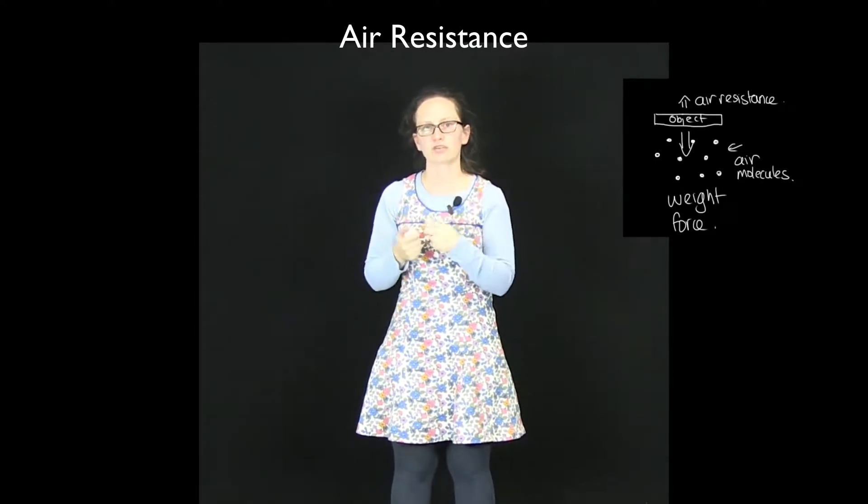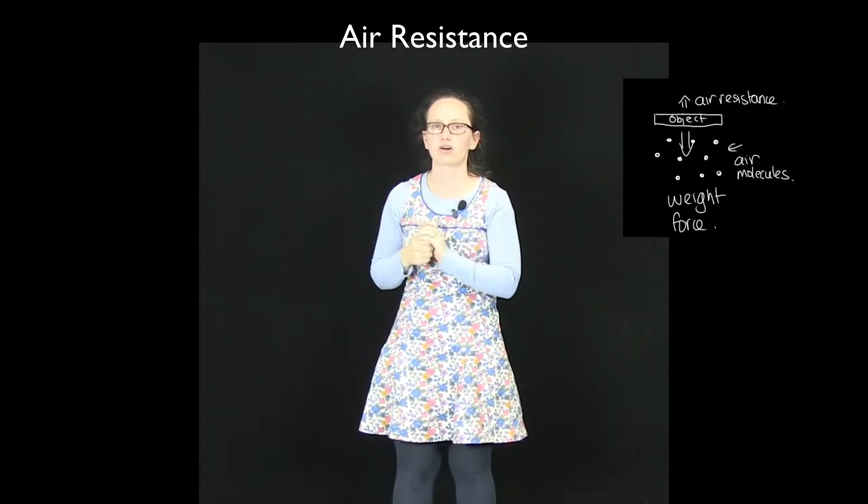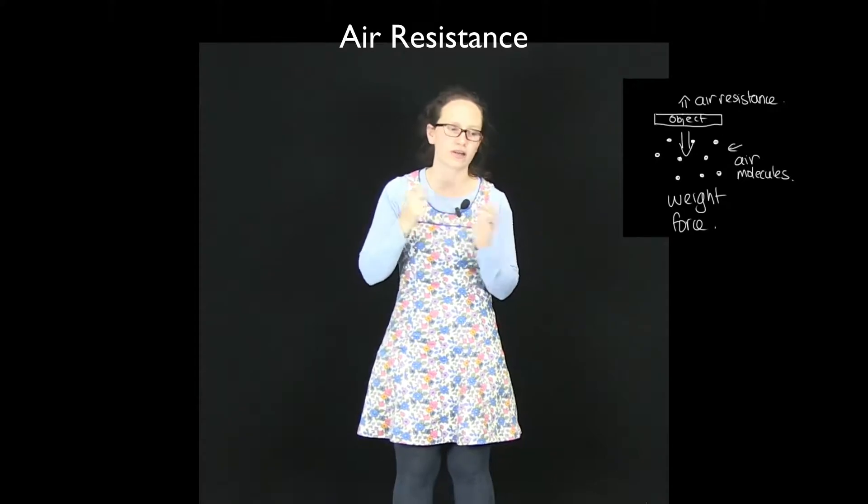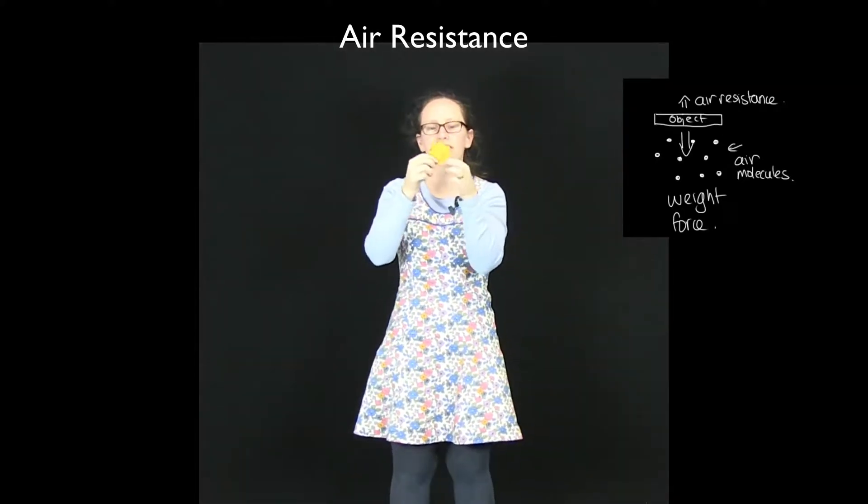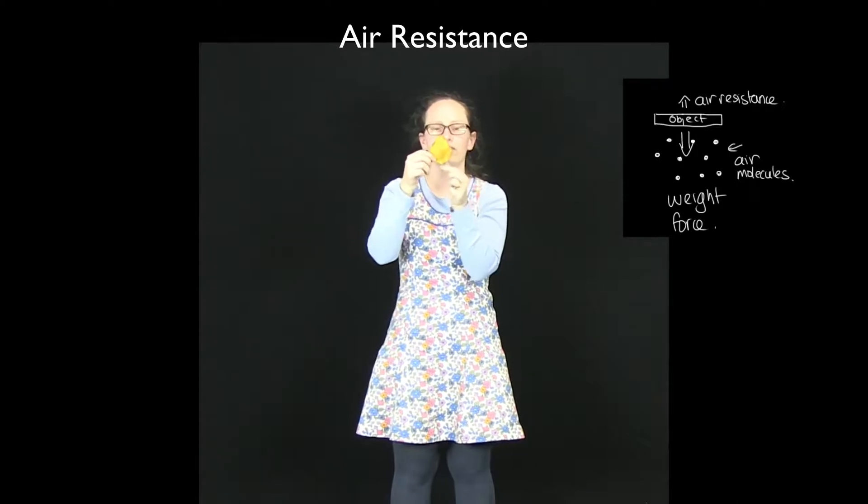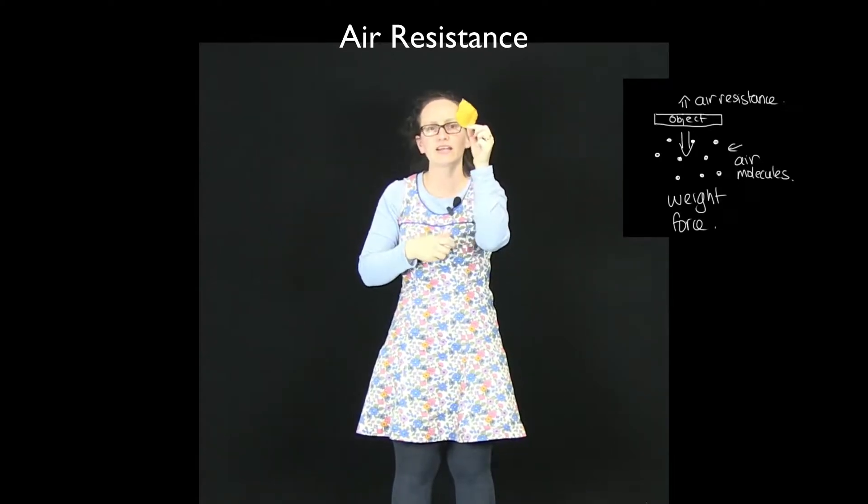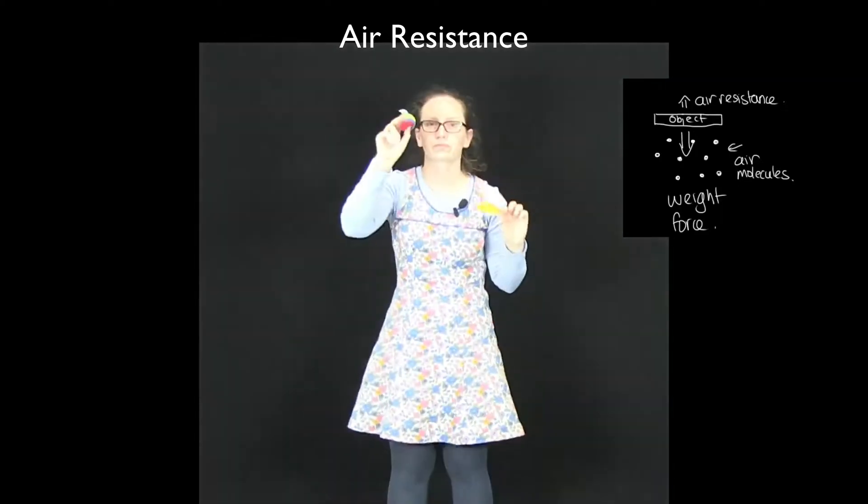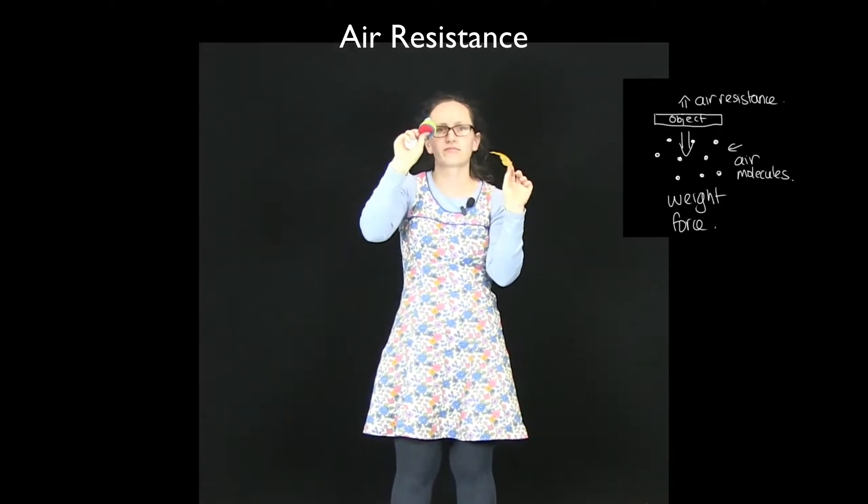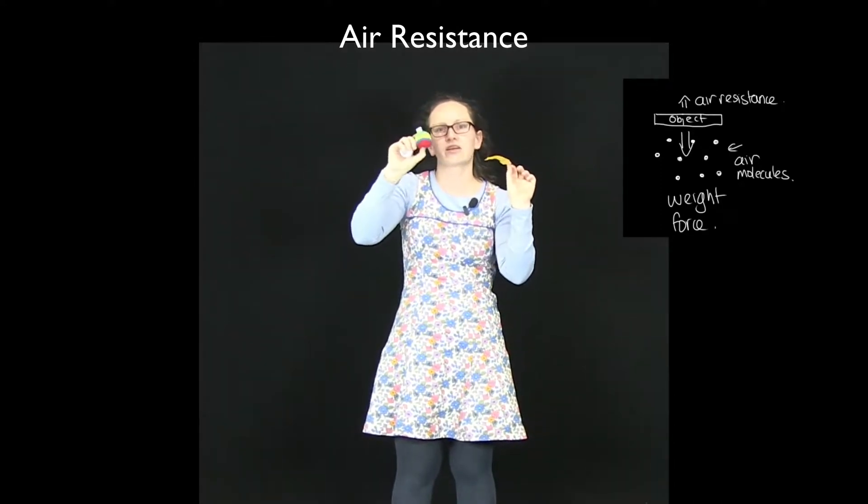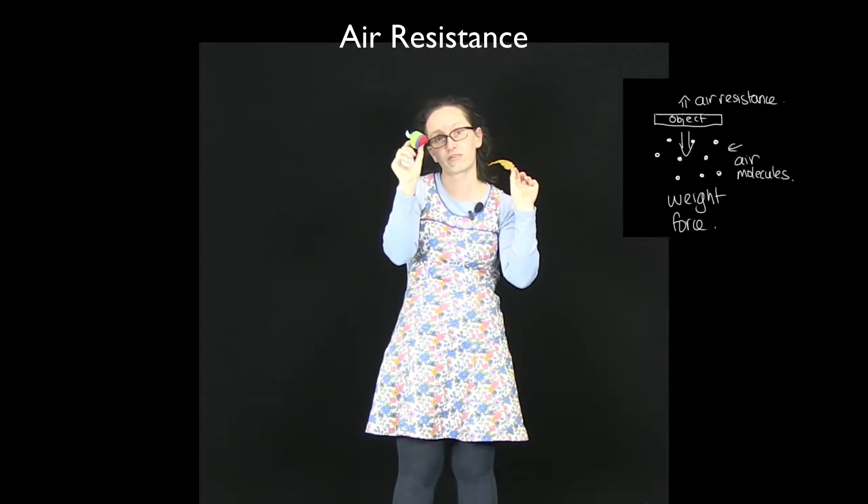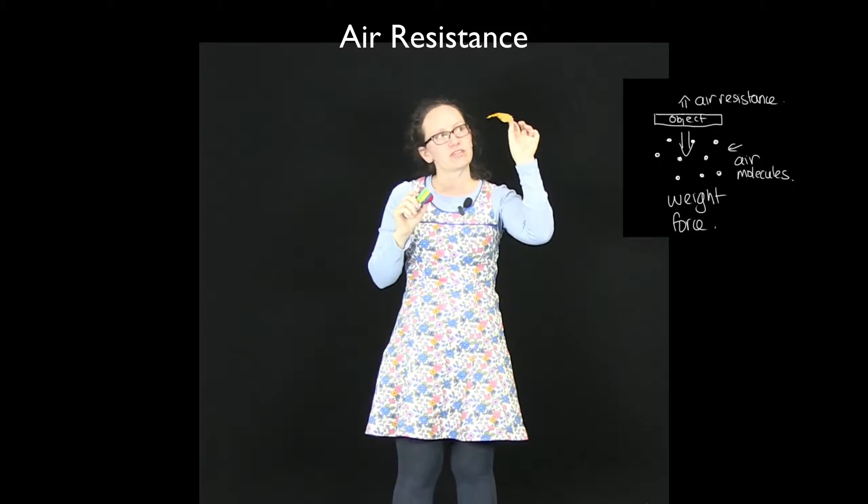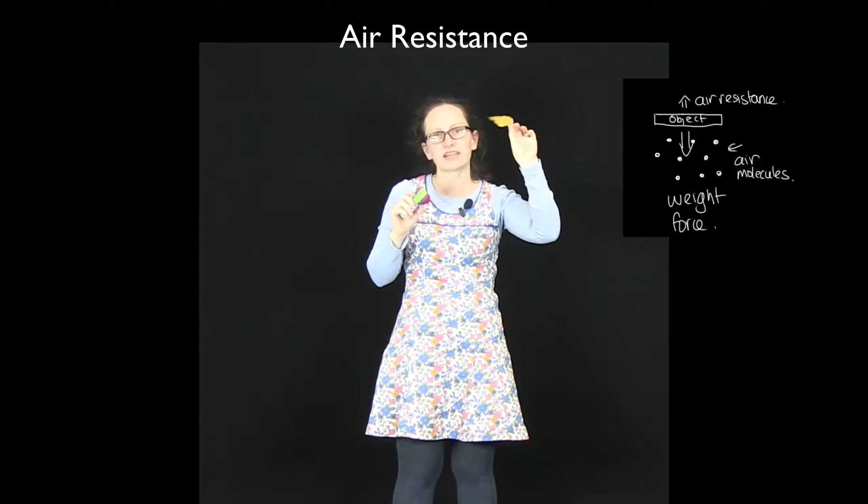Air resistance is more significant the lighter an object is. So air resistance affects this leaf a lot because the leaf has a large surface area and is very light, whereas this ball has a slightly smaller surface area and more mass.